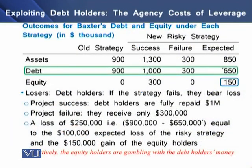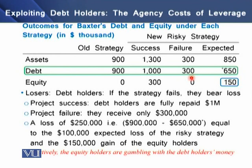We have a table showing the outcomes for the firm's debt and equity under each strategy. In the current state, the firm has assets of $900,000. If the firm does nothing, it can pay only $900,000 toward the $1,000,000 debt. In case of success from the risky strategy, after paying off the debt, the equity holder will get $300,000 as a payoff. In case of failure, the equity holder will lose nothing, but the debt holders cannot receive their full repayment.